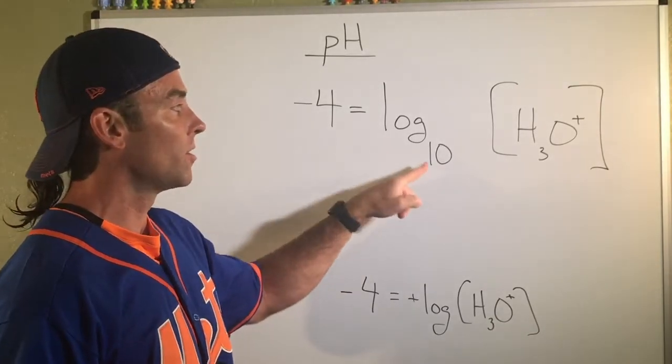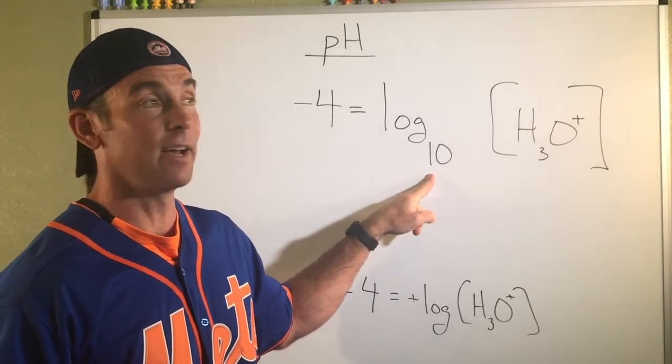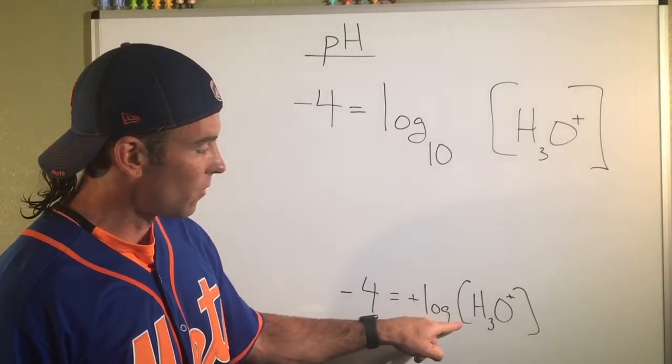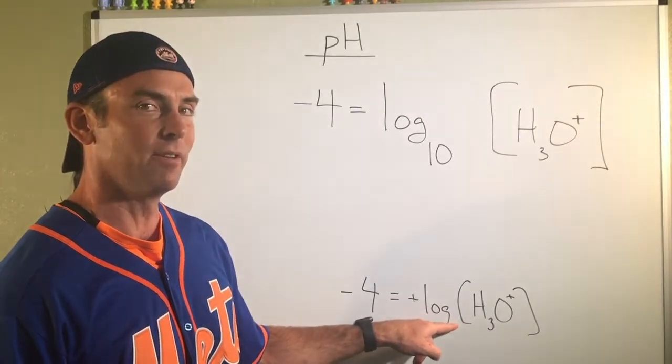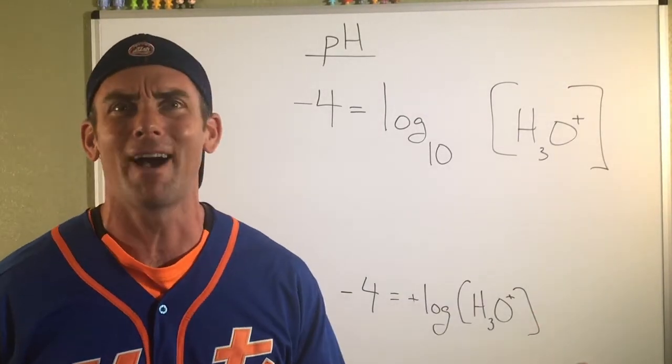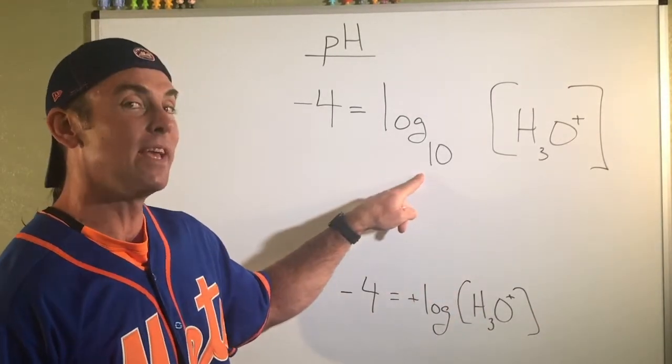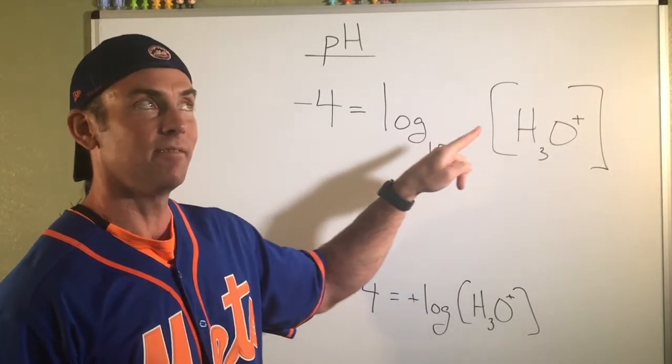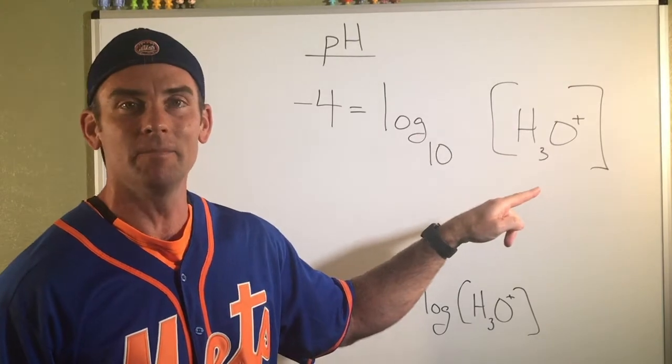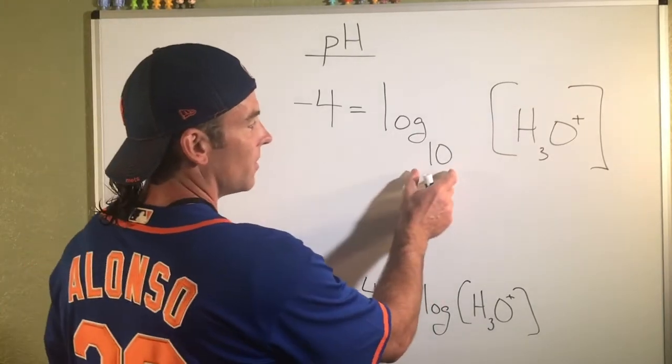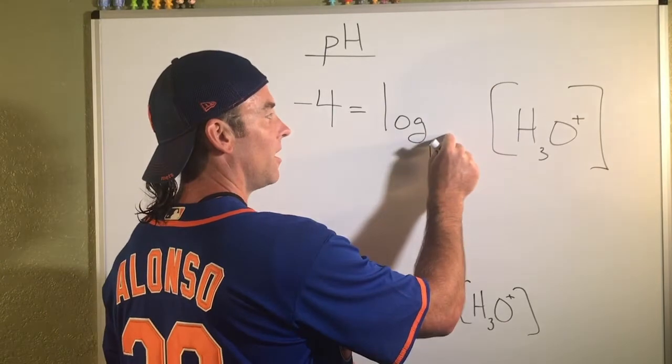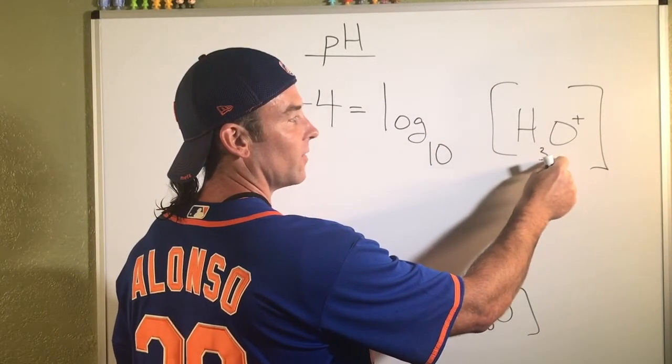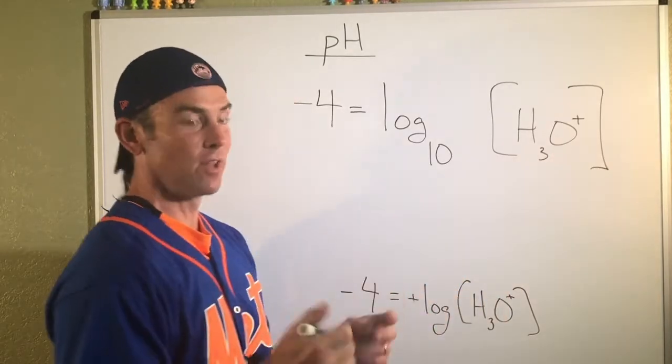I don't know how much math all of you have had, but in written in this form, the 10 is assumed, believe it or not. I didn't make the rules. I don't know why, but it is. So these are base 10 logarithms. And what a logarithm is actually, the question that it's kind of answering is what number do I have to take 10 to the power of to equal whatever is in these parentheses right here. And that's the way every logarithm is.